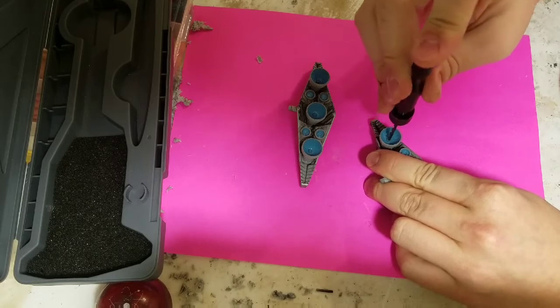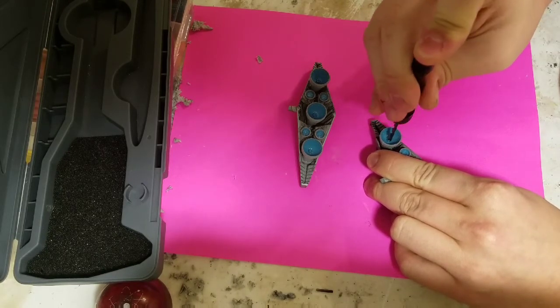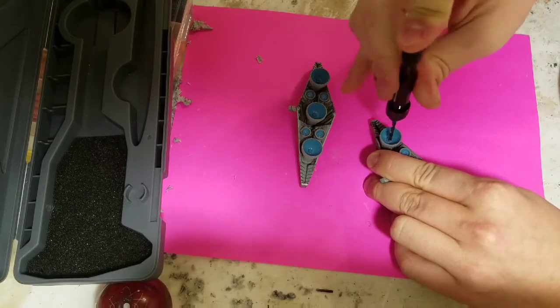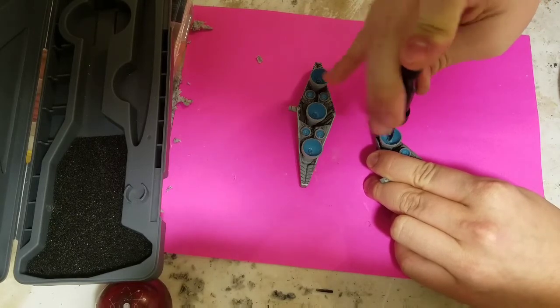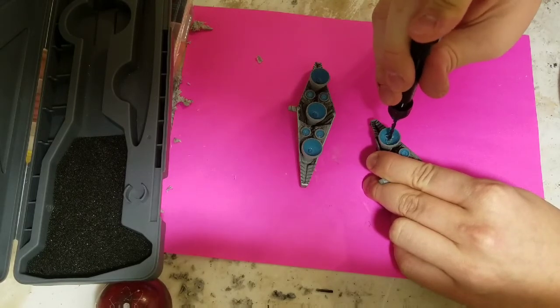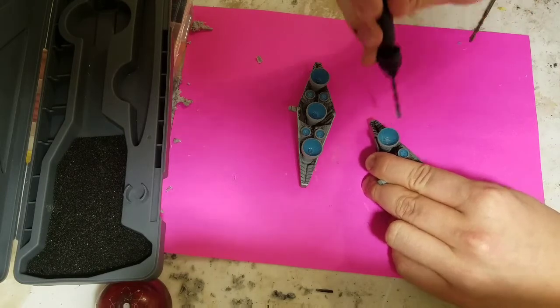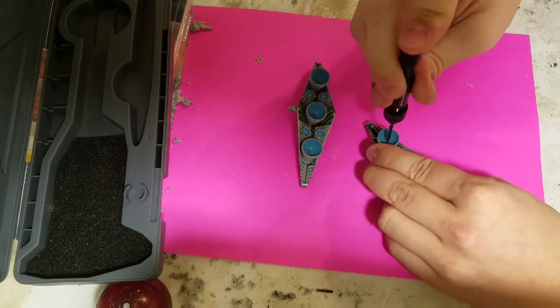To start with, you'll want a 3mm drill bit and a pin vise. We're going to be drilling out the three primary engines by hand to ensure we get it centered and vertical for perfect alignment of the LED behind it. After that, we'll work with the Dremel.